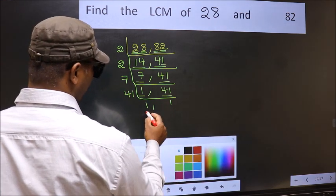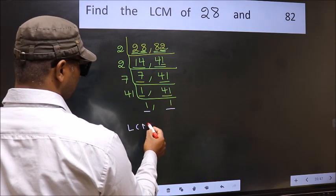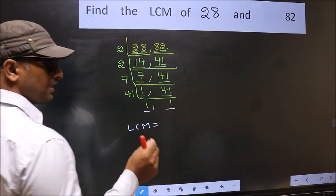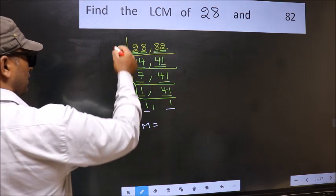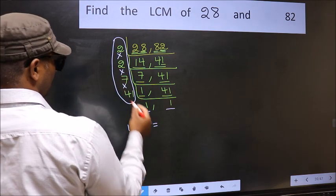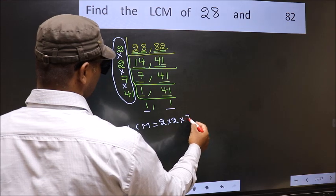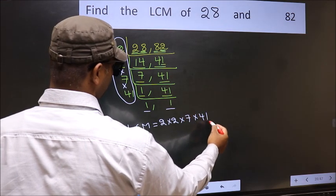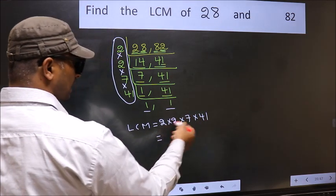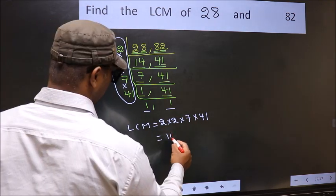So we got 1 in both the places. So our LCM is the product of these numbers. That is 2 into 2 into 7 into 41. When we multiply these numbers, we get 1148. This is our LCM.